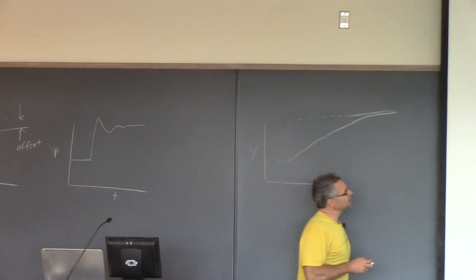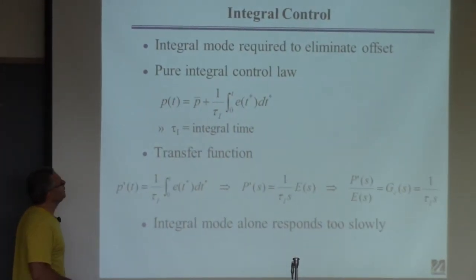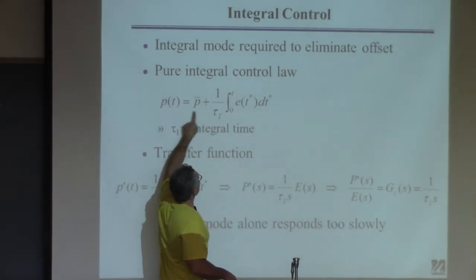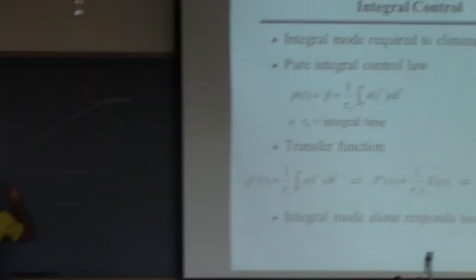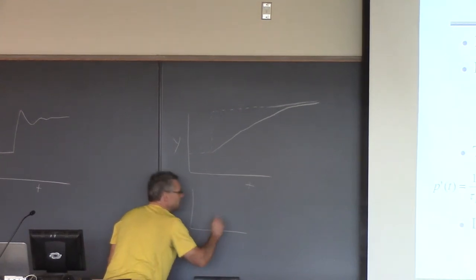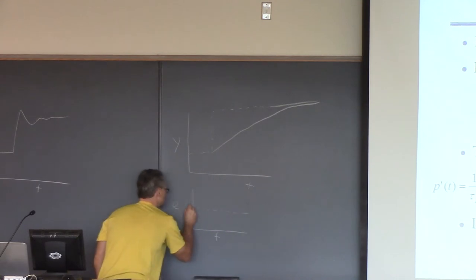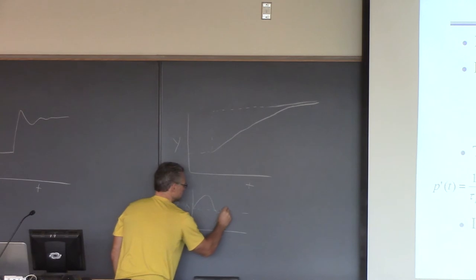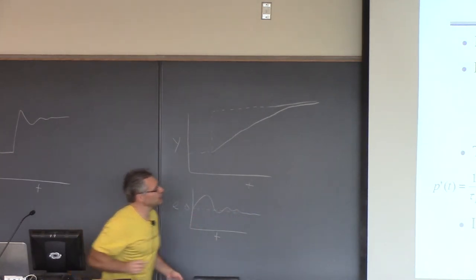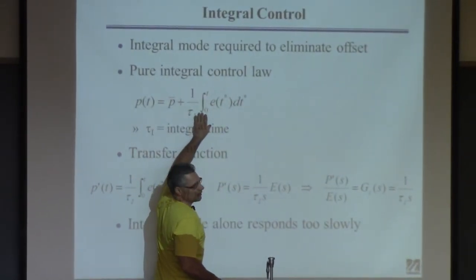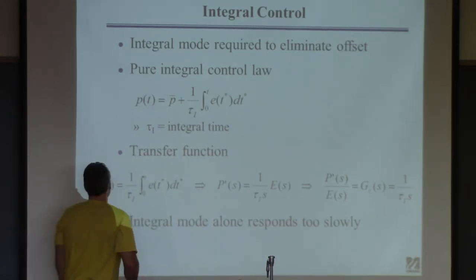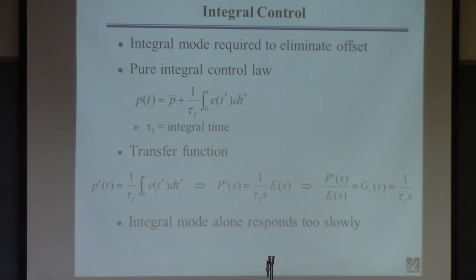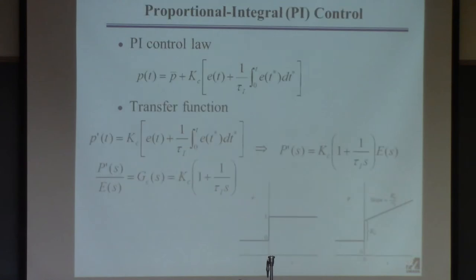Why does integral control eliminate offset? Because the controller output is proportional to the integral of the error. As long as the error is nonzero, the integral keeps accumulating a value, and it keeps changing P. P will only stop changing when the integral assumes a constant value — meaning the error itself goes to zero. Without integral control, that doesn't happen, which is why proportional-only control doesn't eliminate offset.